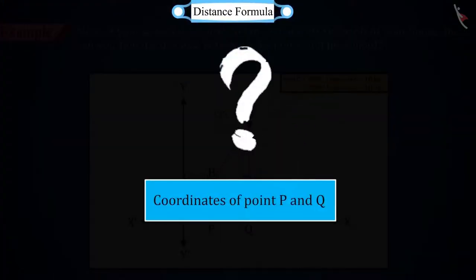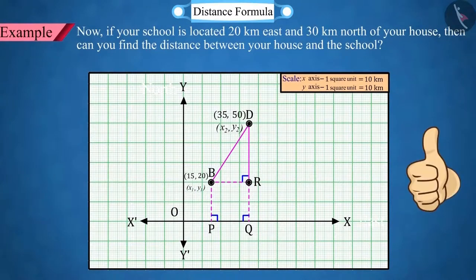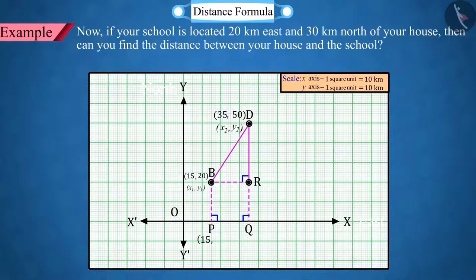Can you tell the coordinates of the points P and Q? Good. The coordinates of point P and Q are 15, 0 and 35, 0 respectively.